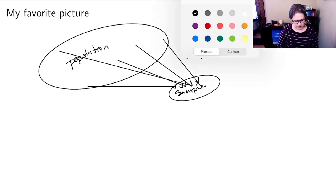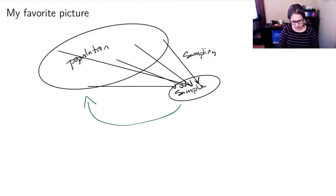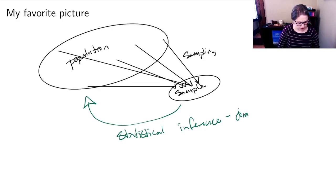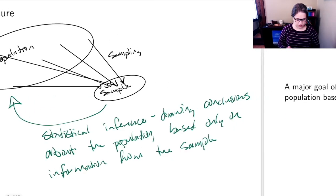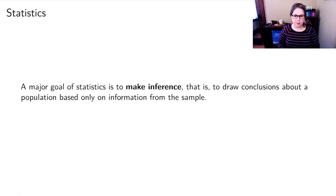And then we are trying to do something going back in the other direction, moving from the sample to the population. We want to make statistical inference. And remember, inference is drawing conclusions about the population based only on information from the sample. So here we have that again. We're making inference, drawing conclusions about the population based only on information from the sample.